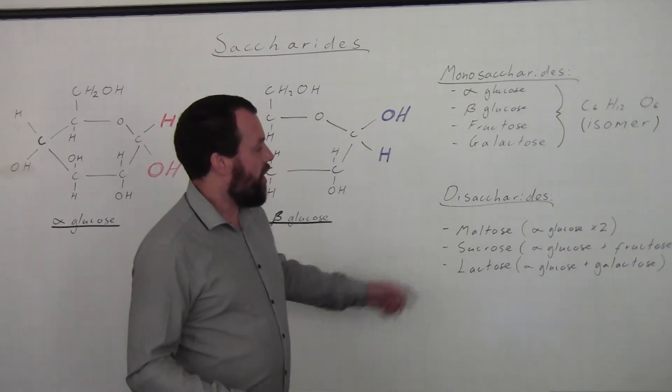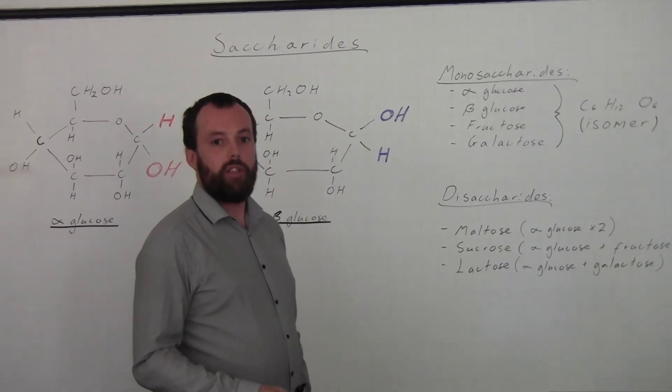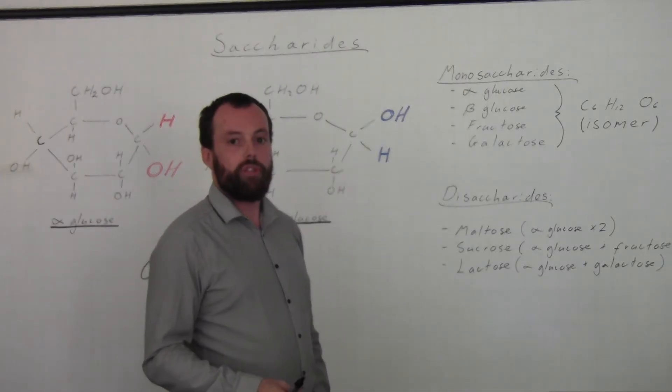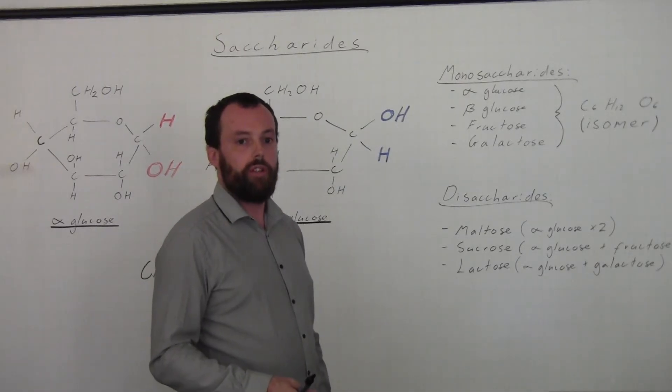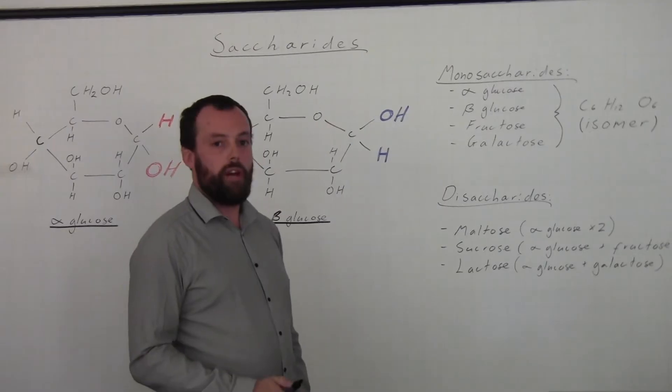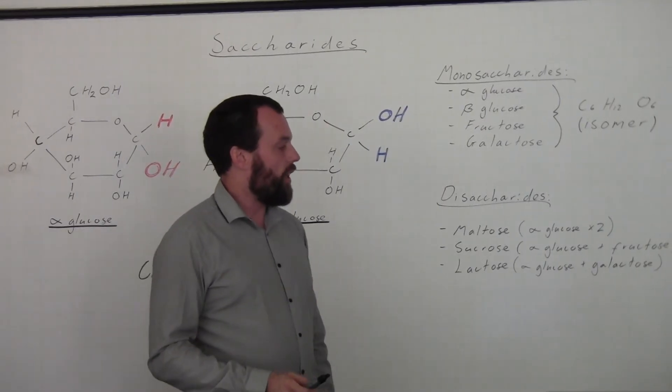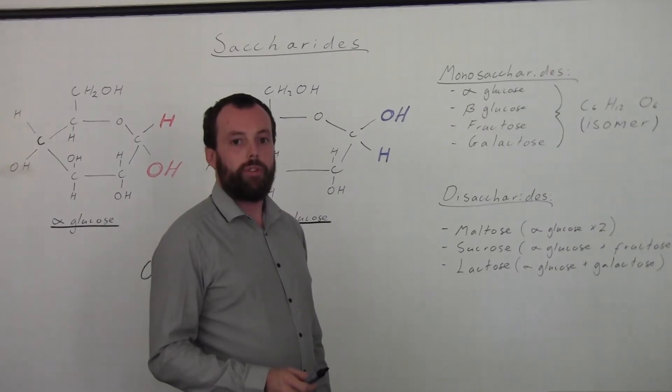We can see the disaccharides that we need to know about listed here. Maltose is made from two alpha glucose joined together. Sucrose from an alpha glucose and a fructose. And lactose from an alpha glucose and a galactose.